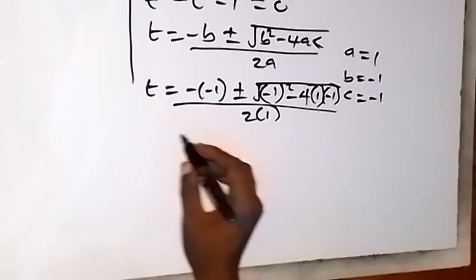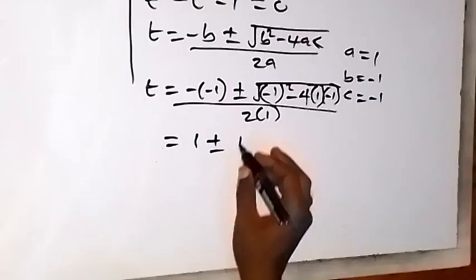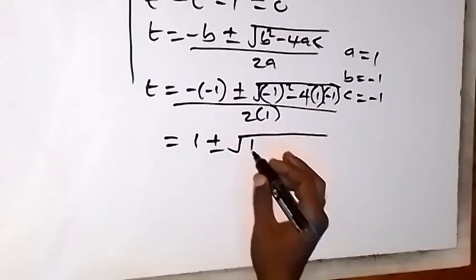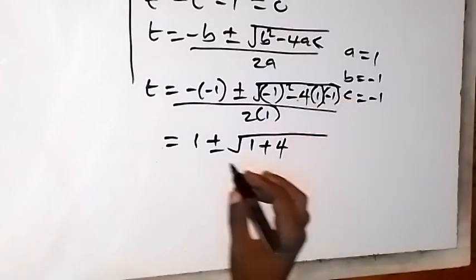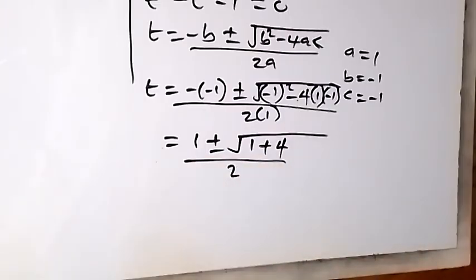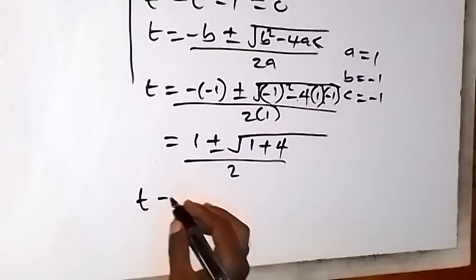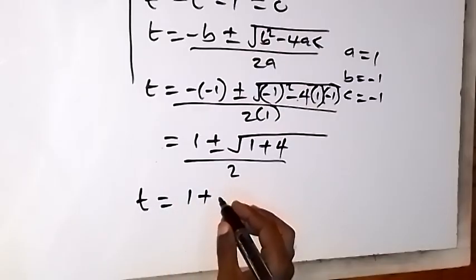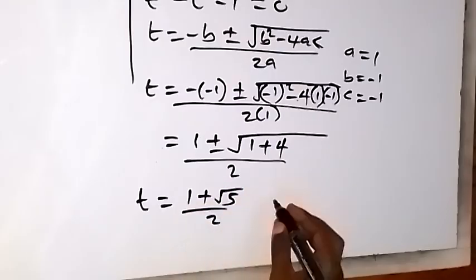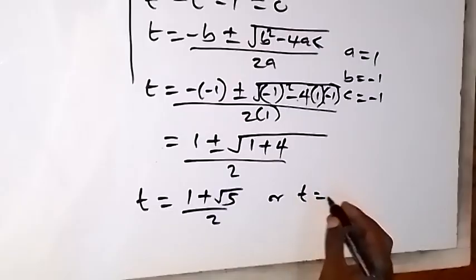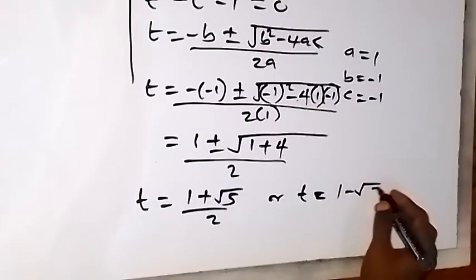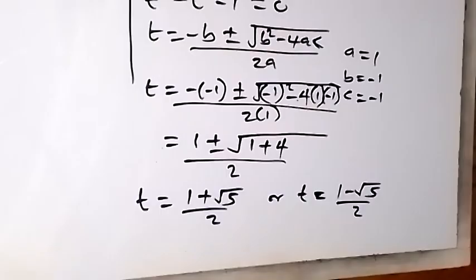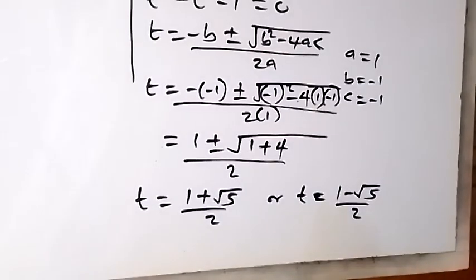Simplifying: t equals 1 plus or minus square root of 1 plus 4, all over 2, which gives t equals 1 plus or minus root 5 over 2. Separating the two possible values, one value is (1 minus √5)/2, which is less than 0, and the other is (1 plus √5)/2, which is greater than 0.